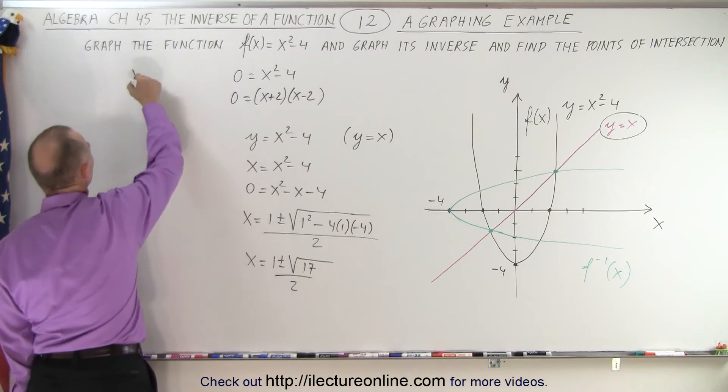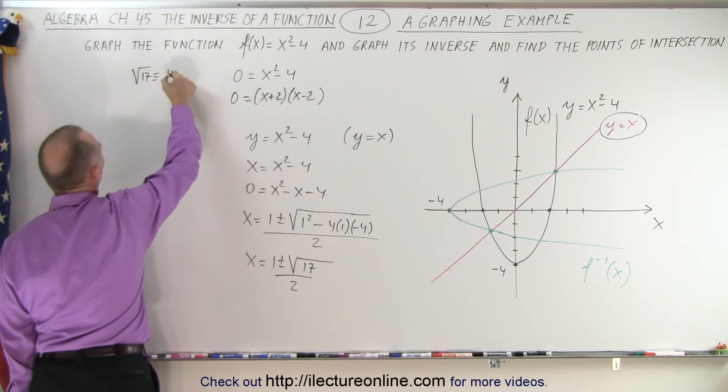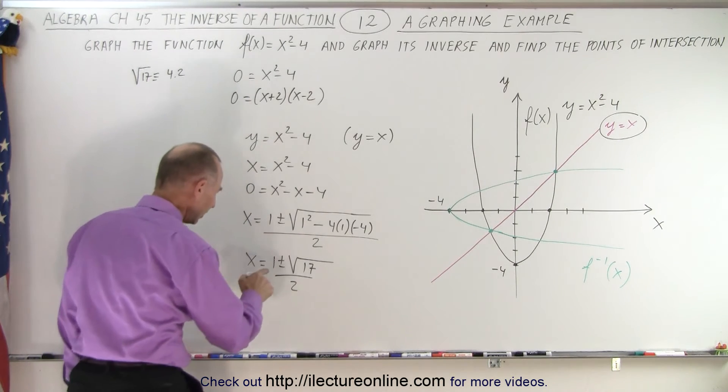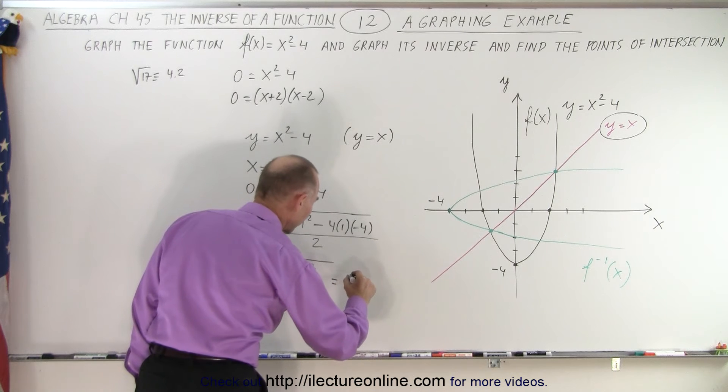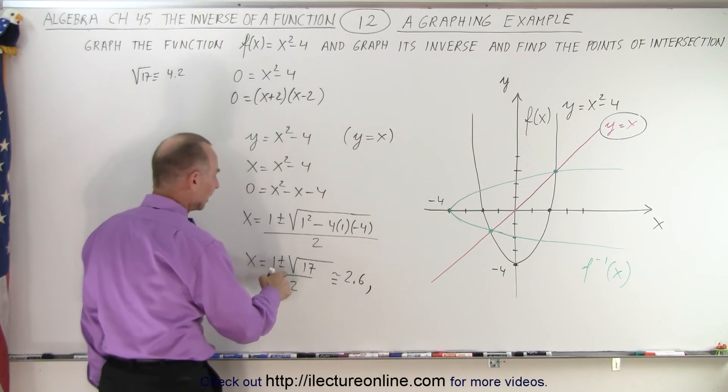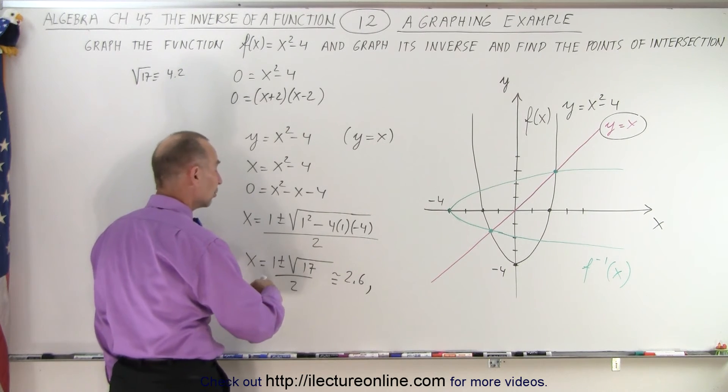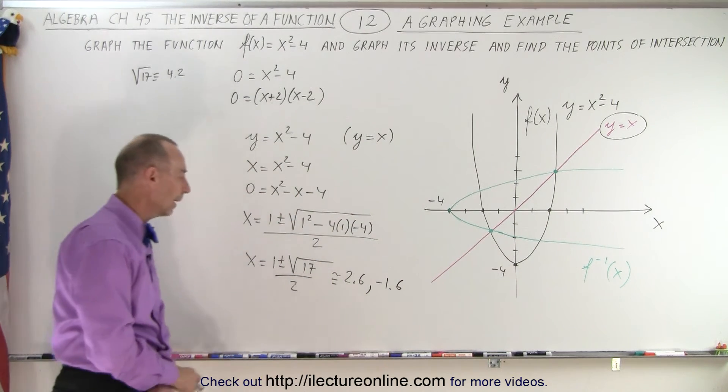And the square root of 17, that's about equal to maybe about 4.2 or something like that, close enough. So here that would be equal to 5.2 divided by 2, that would be about approximately 2.6. Or the negative, negative 4.2 plus 1, that's negative 3.2 divided by 2, that would be minus 1.6. There we go.